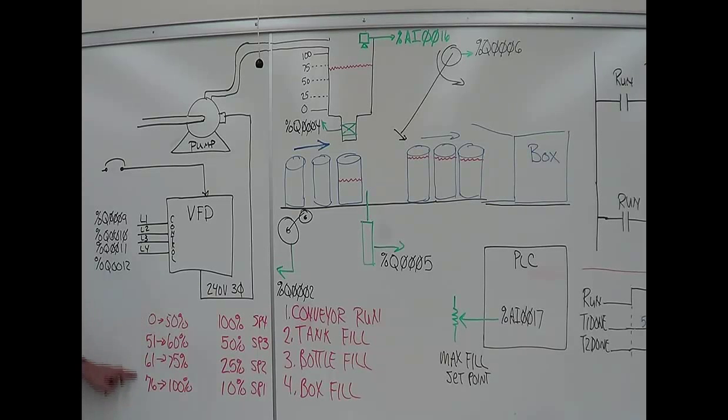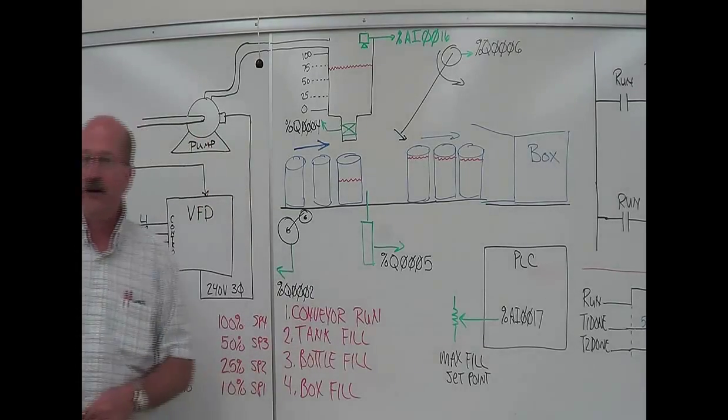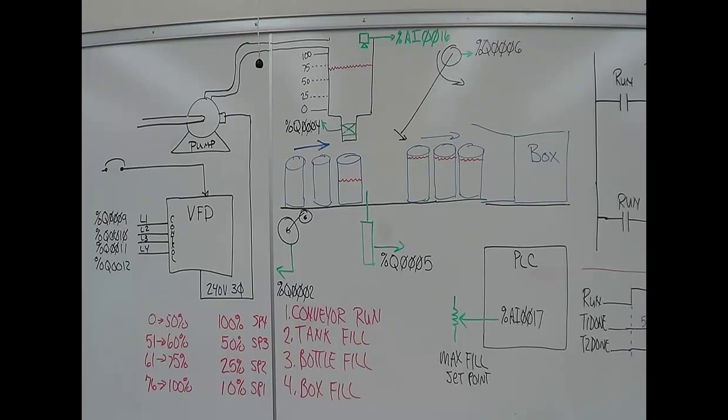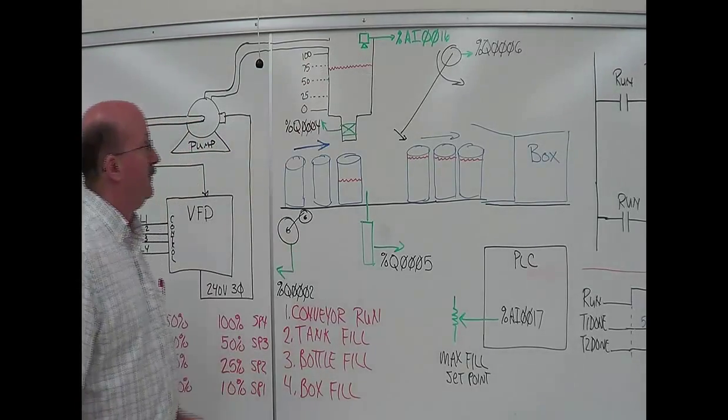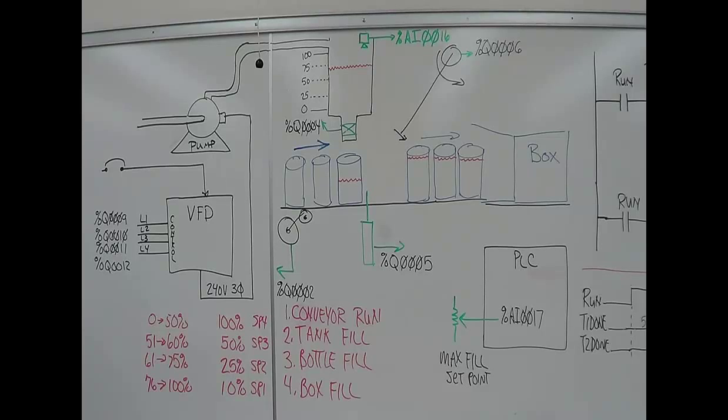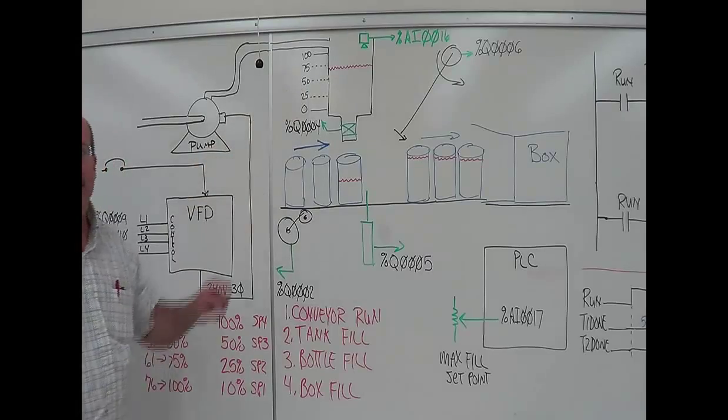Now remember, these percentages are not the absolute percentages but the percentages as modified by your set point over here on your fill point. For instance, if you set your fill point again at 50%, I don't want to go over 50% full. Well, you're multiplying whatever you're reading by that set point and adjusting the speed.